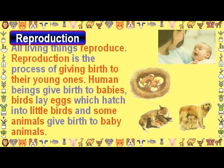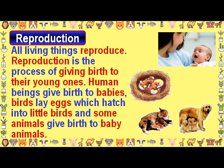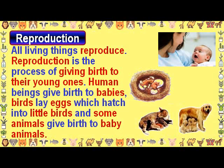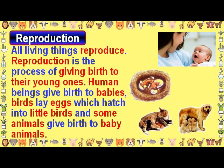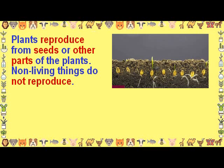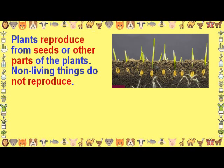Reproduction. All living things reproduce. Reproduction is the process of giving birth to their young ones. Human beings give birth to babies. Birds lay eggs which hatch into little birds, and some animals give birth to baby animals. Plants reproduce from seeds or other parts of the plant.